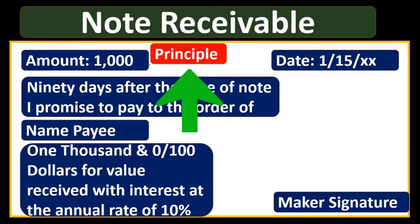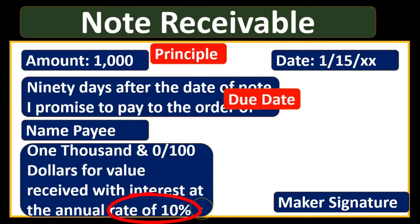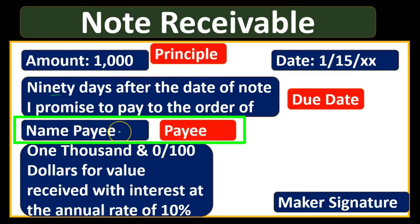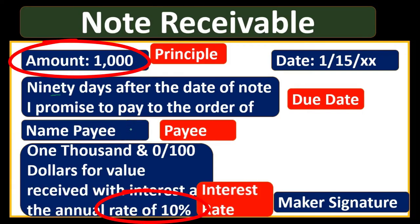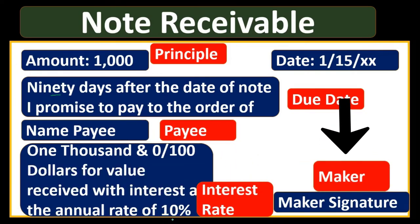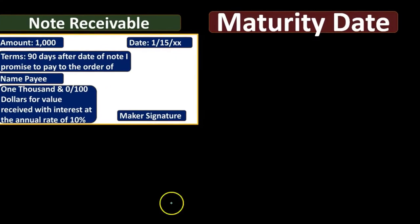So to summarize the components: the principal is the amount of the original loan; the interest is an additional payment component; the due date is 90 days from the date of the note, which we'll have to calculate; the payee is who gets paid at the end — the $1,000 plus interest; the interest rate is 10%; and the maker is the person who signed the note and made the promise.